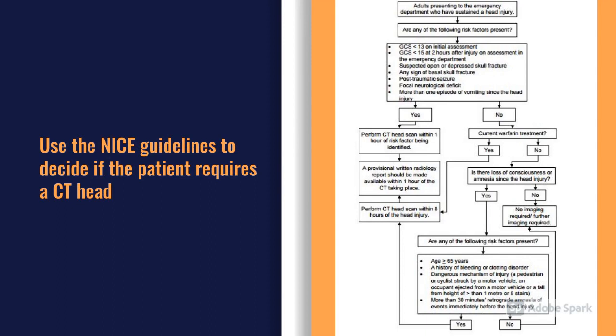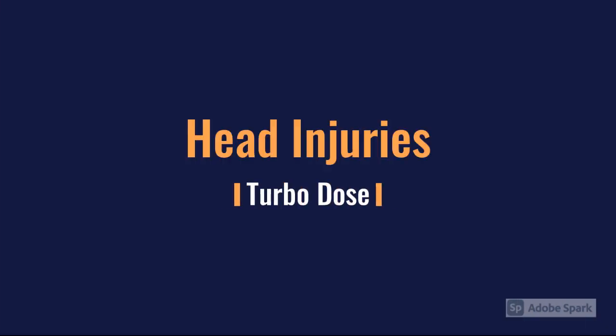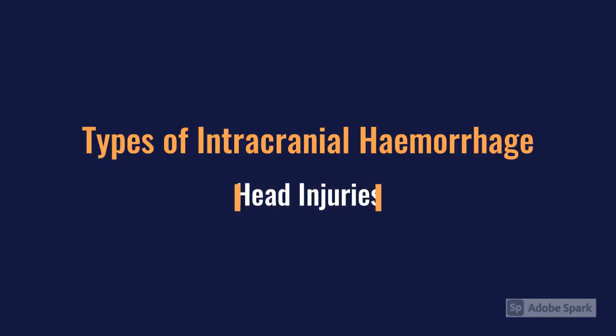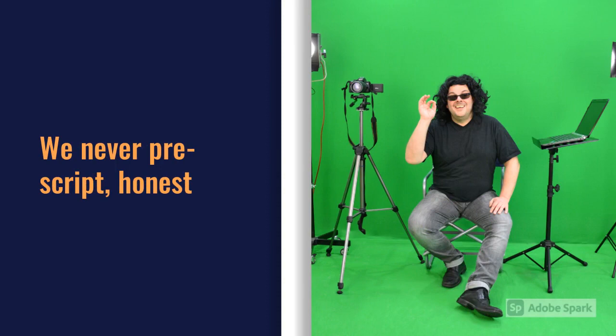So let's say we've gone through, seen our patient with a head injury, looked at the NICE CT head guidelines, done a scan — and there's some intracranial blood. What types of intracranial hemorrhage are we looking out for?